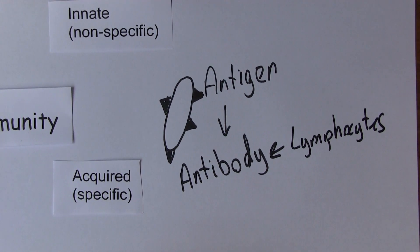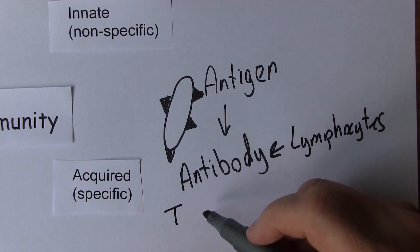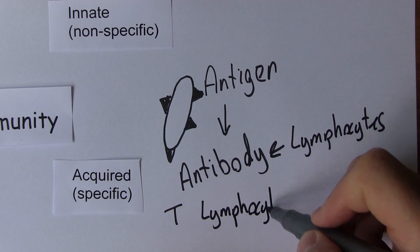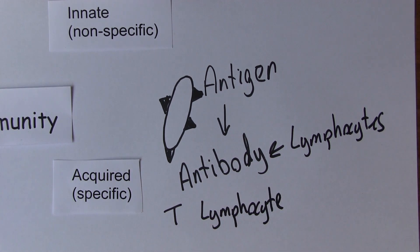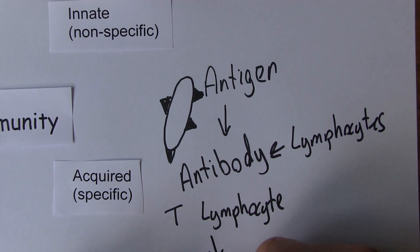So what happens here, usually there is a T-lymphocyte. A T-lymphocyte detects the presence of this antigen. And the T-lymphocyte will stimulate the B-lymphocytes.